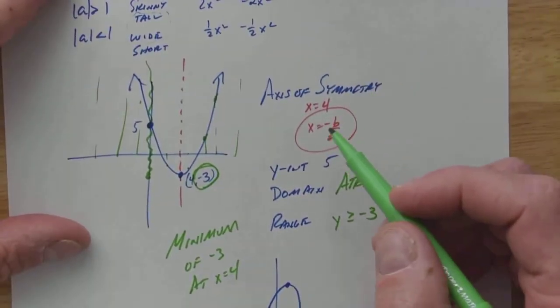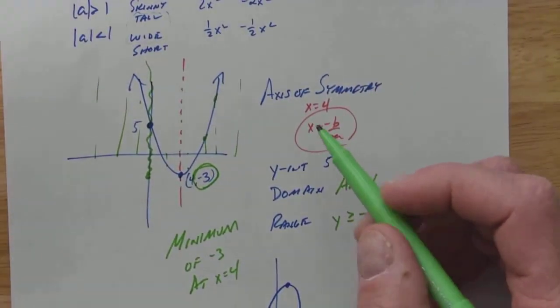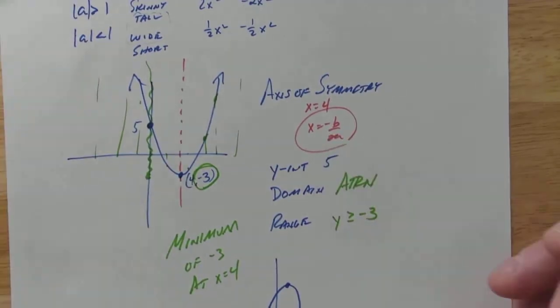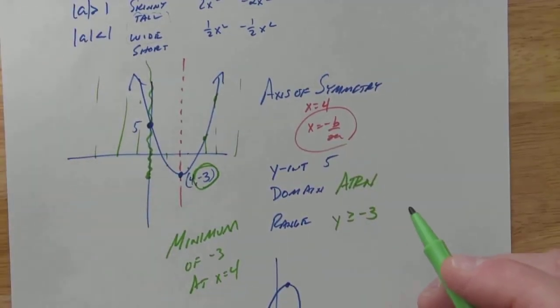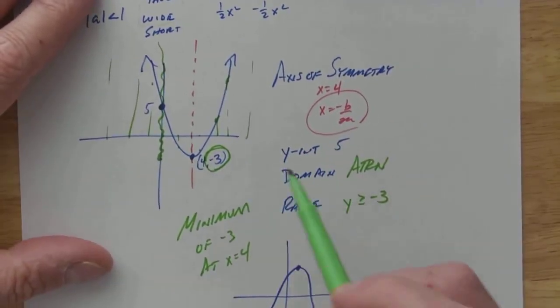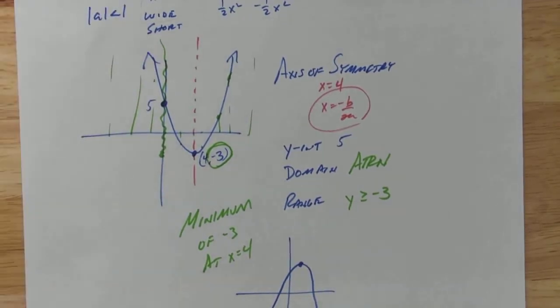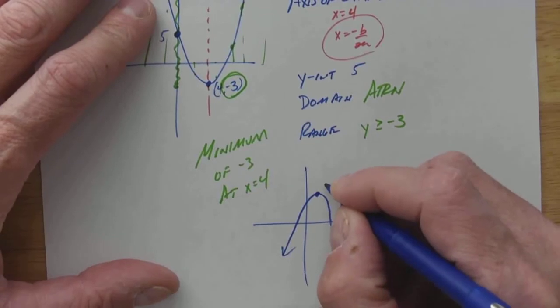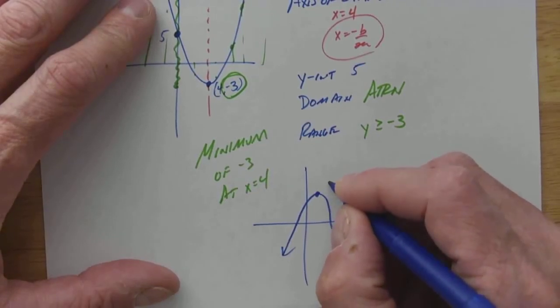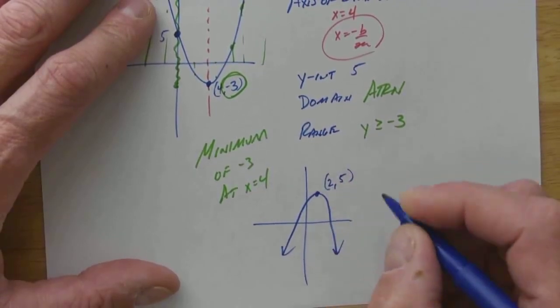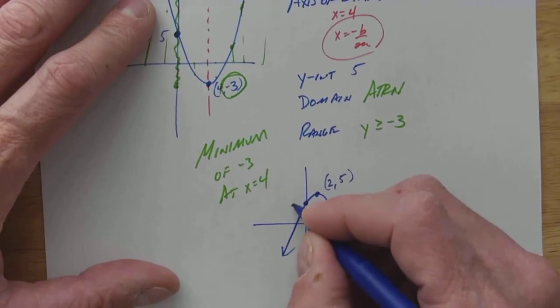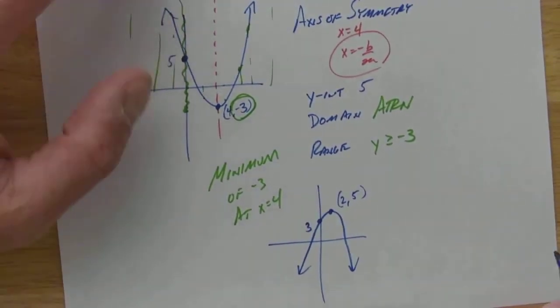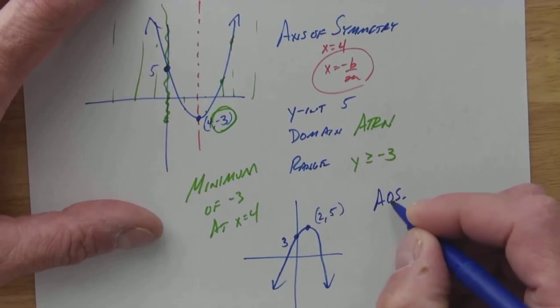So, axis of symmetry. Axis of symmetry, that's a line. X equals whatever your x-coordinate or vertex is. Y-intercept, you can see, my domain and range. Got it. We'll practice this one more time. Say this is 2, 5, and this is 3. Well, let's go through it real quick.